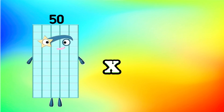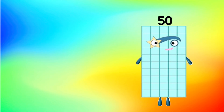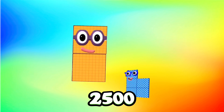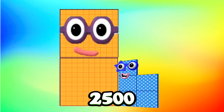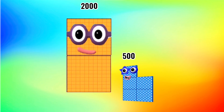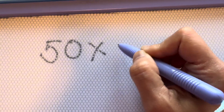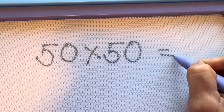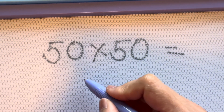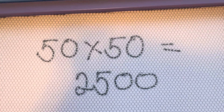50 multiplied by 50 is equals to 2,500. 50 multiplied by 50 is equals to 2,500.